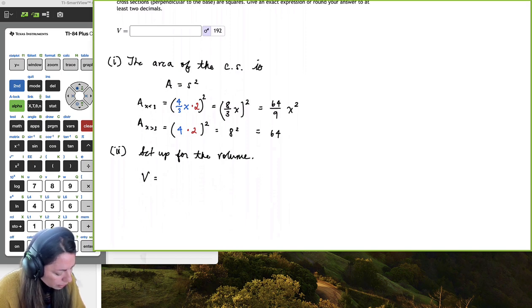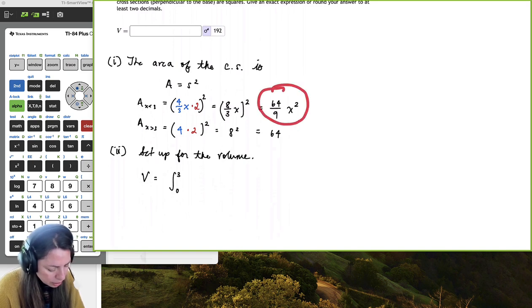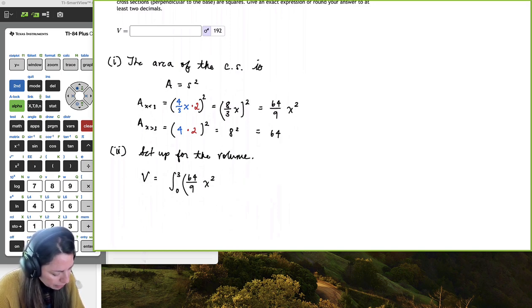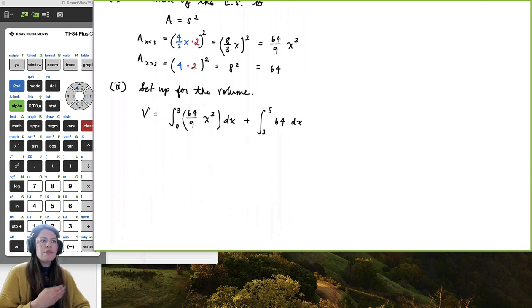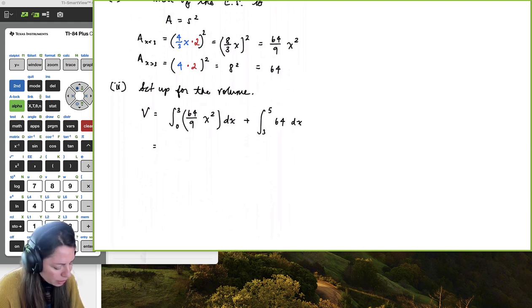So here we know that we can go ahead and set up for the volume. So the volume is equal to the definite integral, the first part from 0 to 3 of the ever-changing on that line 4 thirds x. So here that would be this one. So let's go ahead and just grab that. And then we'll put that in parentheses dx plus the one from 3 to 5 of this one, 64 dx. And now it just becomes a volume problem all the way. So now we can go ahead and integrate.